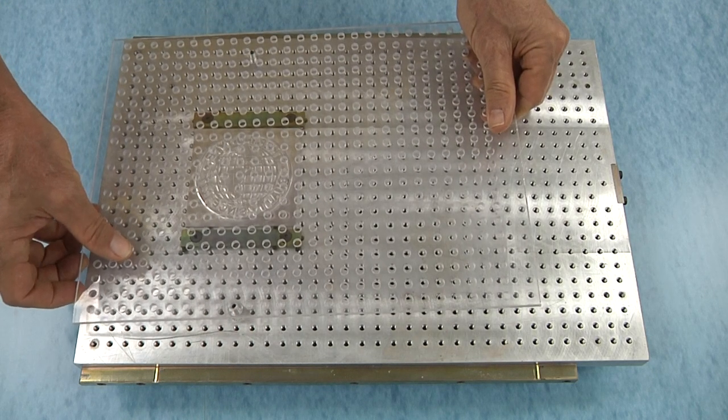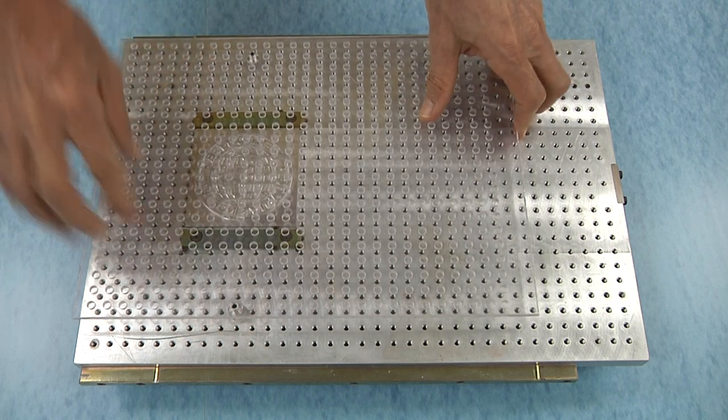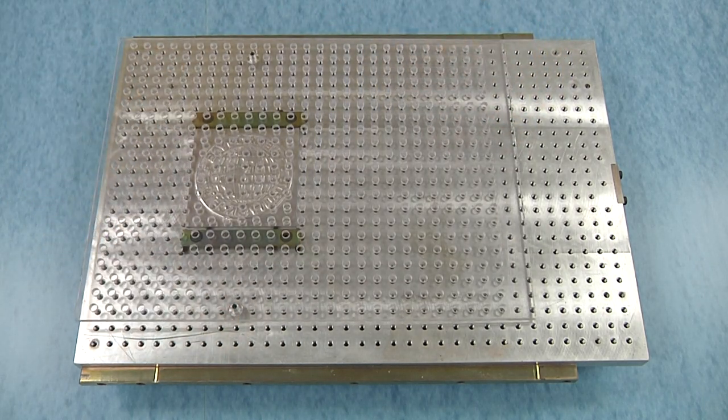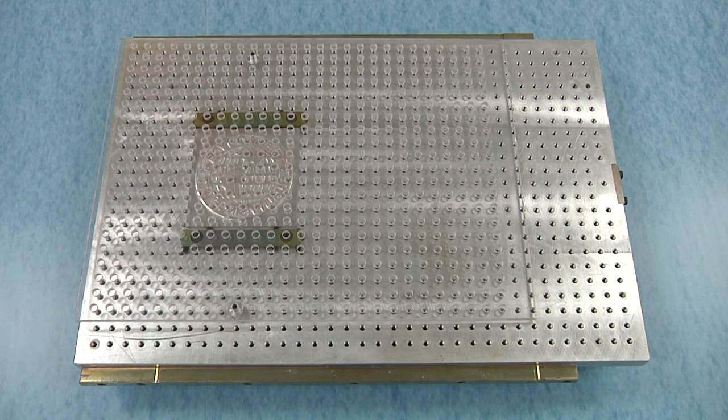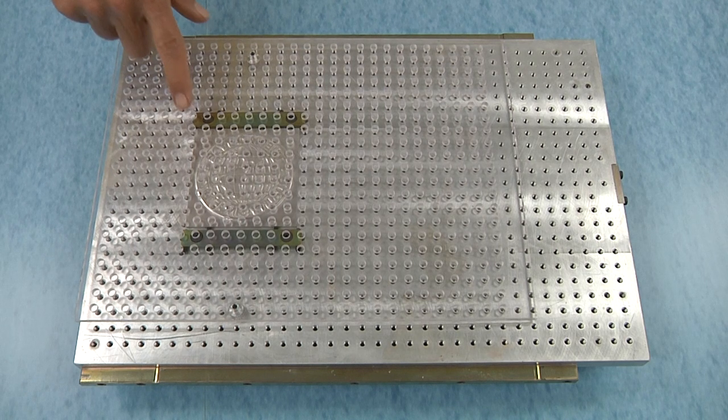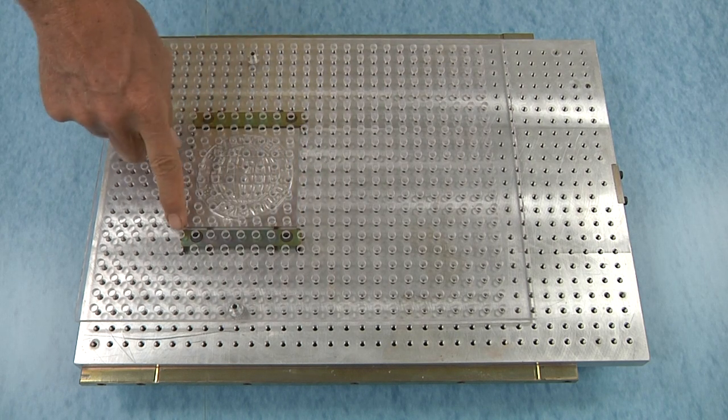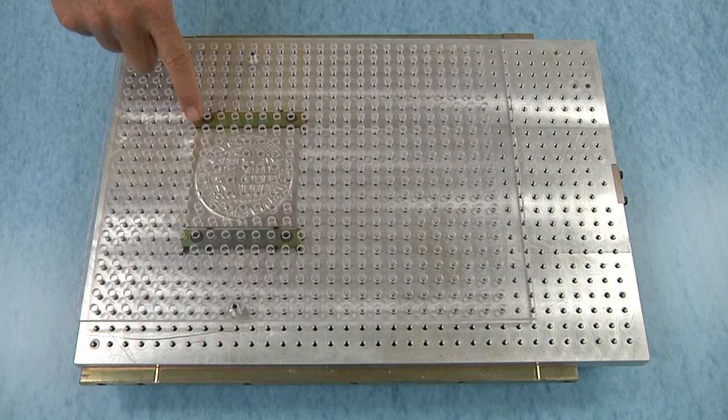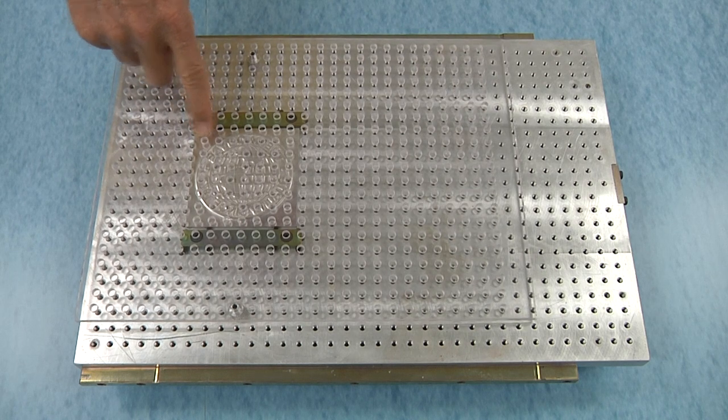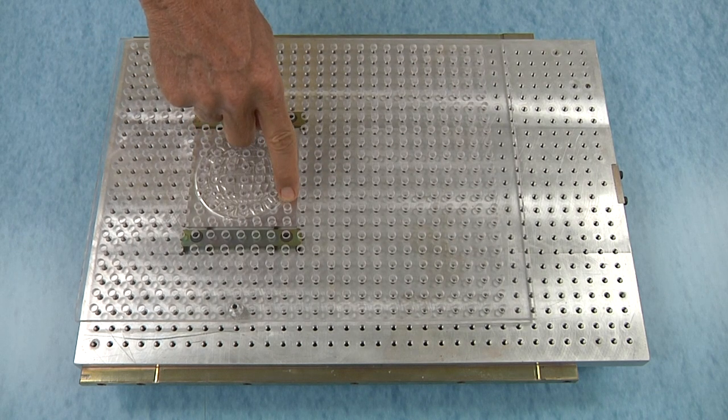Position the transfer punch fixture over the die on the alignment pins. Looking through the holes in the transfer punch fixture, find at least two non-image area positions on the die that align to the holes in the fixture.